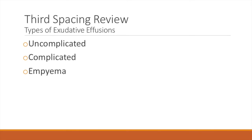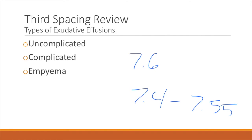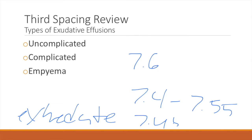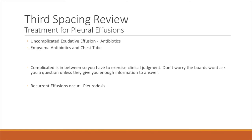So you've decided it's an exudate — what's next? You want to figure out if it's uncomplicated, complicated, or empyema. Normal pH of pleural fluid is going to be about 7.6. Transudates are going to be slightly more acidic, around 7.4 to 7.55. Since exudates are caused by inflammation, they're generally going to be more acidic because there's more metabolic activity. For an uncomplicated effusion, the pH has to be above 7.2. If it's complicated or empyema, it's going to be even more acidic. The key number is 7.2: above 7.2 is complicated, below 7.2 is empyema.